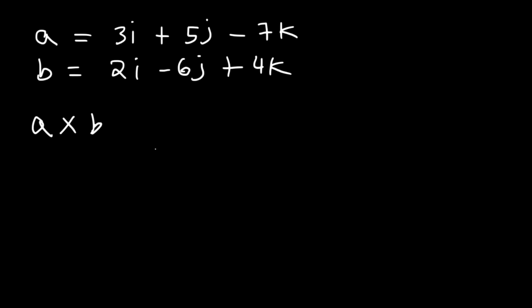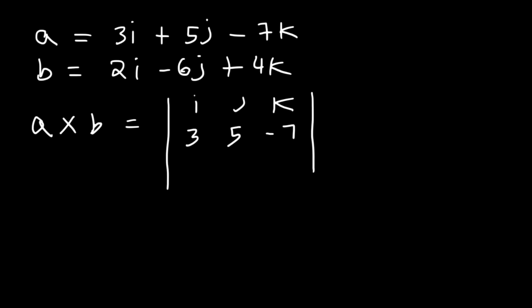How can we find the answer? What I like to do is first put this in the form of a matrix. This is i, j, k, which corresponds to the x, y, and z components of a vector. Then we put vector A in the middle row: 3, 5, and negative 7. And then vector B in the last row: 2, negative 6, and 4. Basically you've got to find the determinant of this 3 by 3 matrix.